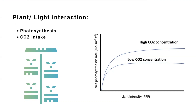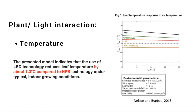Then we have temperature. It's pretty well known that light can affect temperature. As we learned, light can also behave as a wave of radiation. For example, when selecting a light fixture, we can also get information about the heat provided by the lamp. When comparing LEDs to high pressure sodium lamps, we can learn that leaf temperature can be reduced by about 1.3 degrees Celsius or more when using LEDs.